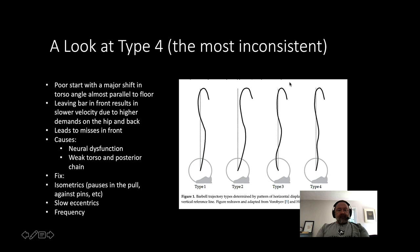The final one, Type 4, causes the most issues and is the most inconsistent. We need to be careful in America because we always talk about a vertical bar path — but there's no such thing. Trying to achieve a vertical bar path is more what Type 4 looks like, and it means you're leaving the bar out front. The poor start involves a major shift in torso angle, almost becoming parallel to the floor right out of the gate. They initiate the pull but the butt flies up and almost instantly there's a change in angle.